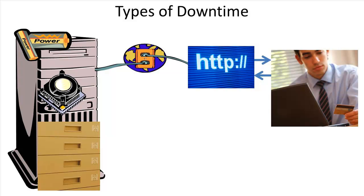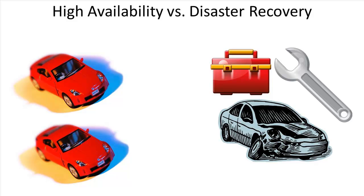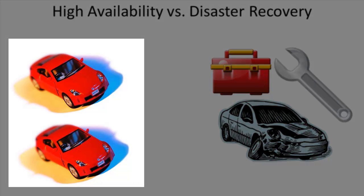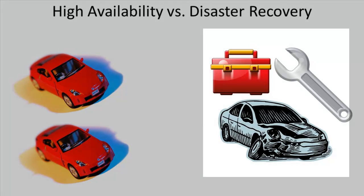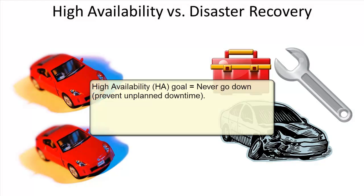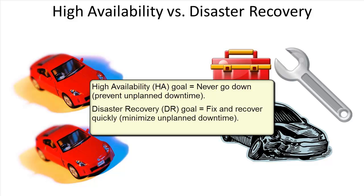You'll hear the terms high availability and disaster recovery frequently — and they are two different things. High availability is usually some sort of spare or failover system so that you always have an operationally available resource. Disaster recovery is a plan to make something that is no longer available become available as quickly as possible. The goal of high availability is to never go down, or at least prevent unplanned downtime. The goal of disaster recovery is to fix and recover quickly to minimize unplanned downtime.